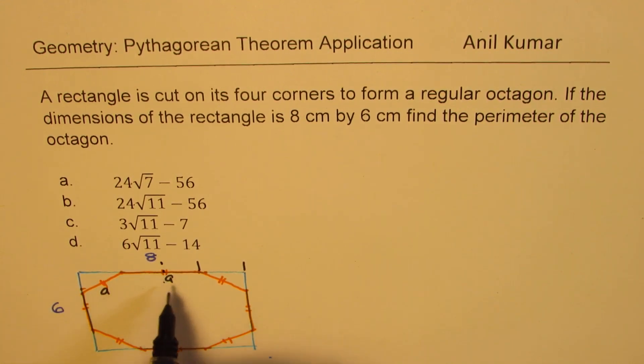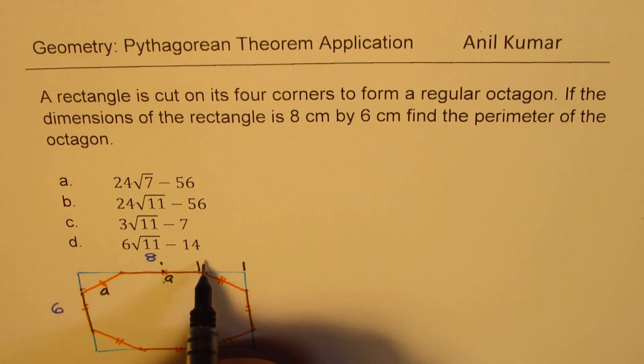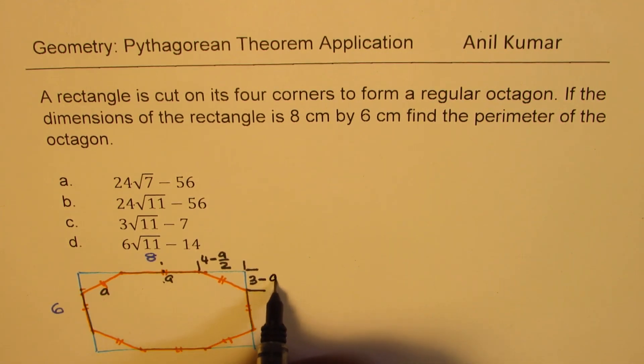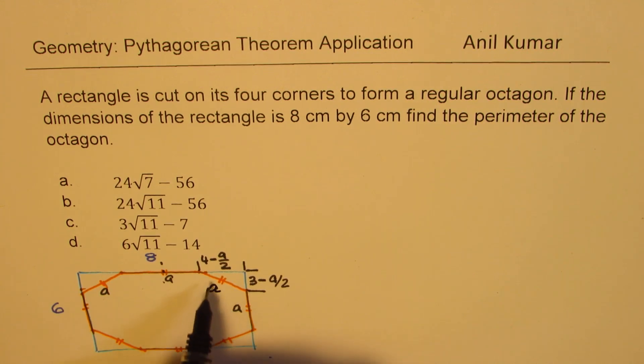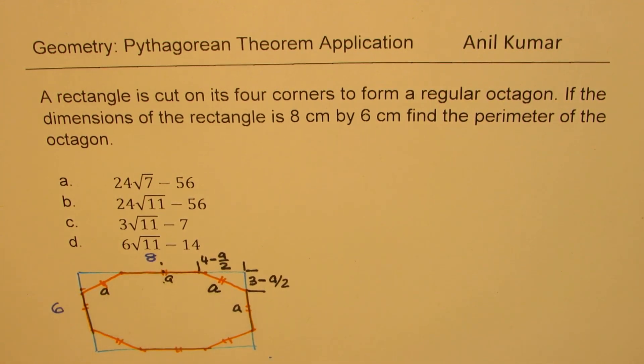Well, half of it is 4 and half of A. So it could be 4 minus A by 2. On this side, this corner, the dimension of that cut corner will be 3 minus A by 2, since this side is A and the total is 6. And the hypotenuse will be A, since all the sides are A units long.